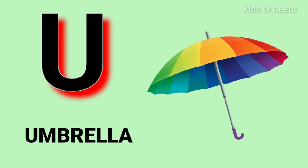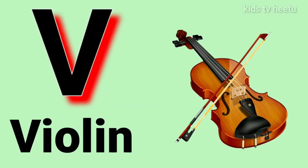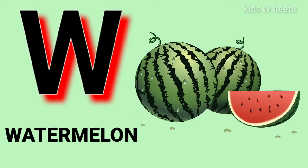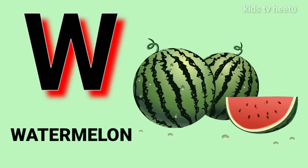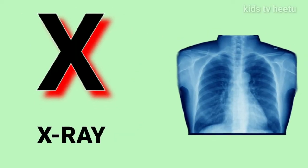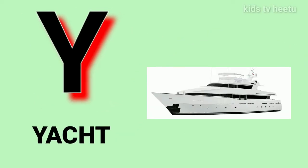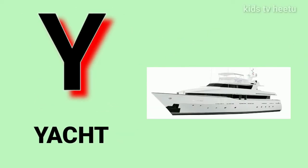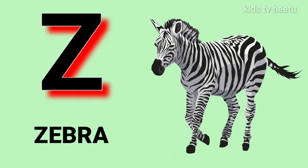U for umbrella, V for wine, W for watermelon, X for a stray, Y for yard, Z for zebra.